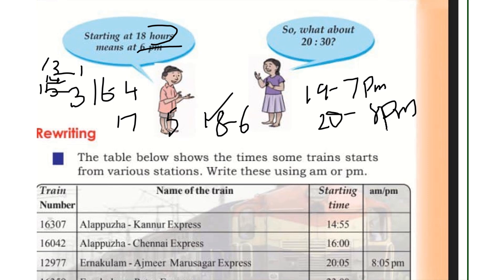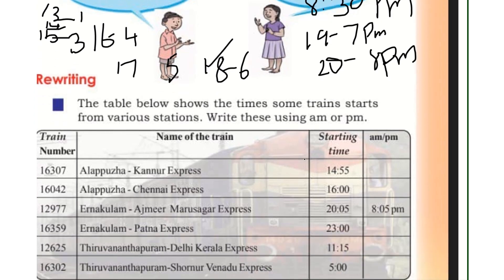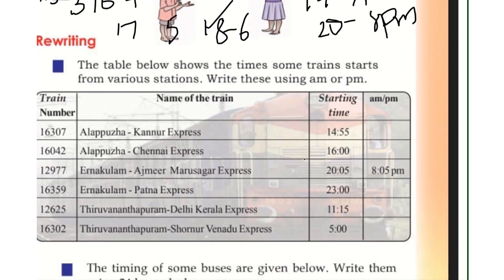20 hours means 8 PM. Next, we are going to look at train numbers, names, and starting times.